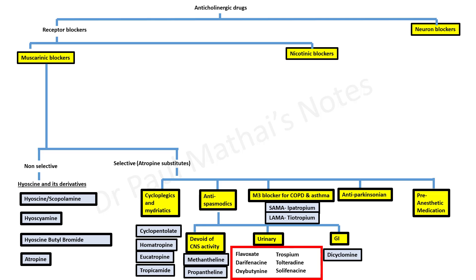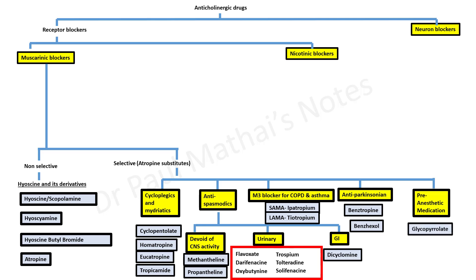Anticholinergic anti-Parkinsonian drugs include benzhexol and benztropine, while the most famous example of an anticholinergic pre-anesthetic medication is glycopyrrolate.